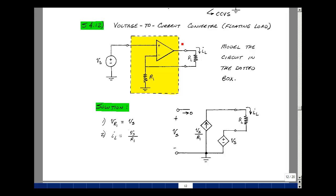Given this circuit in the yellow box, can you develop a model for this circuit so you could replace this by the model and predict the same behavior at the output and input terminal?